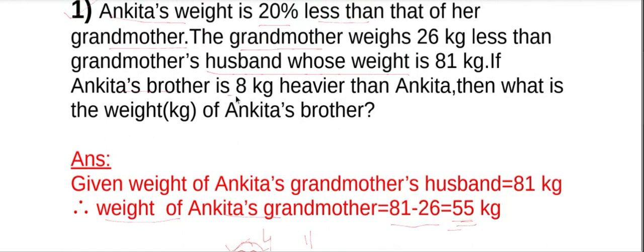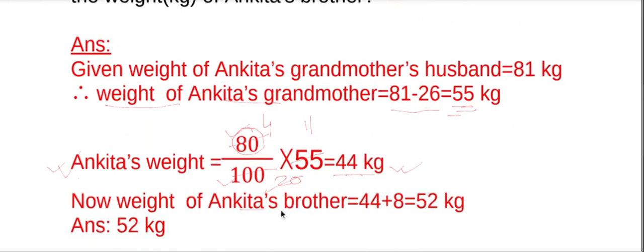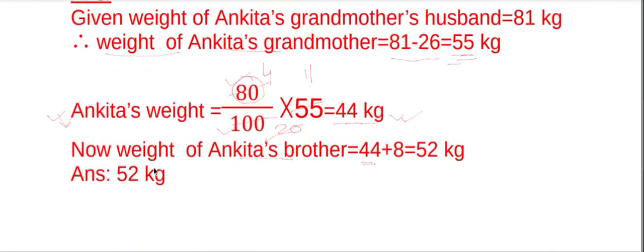Ankita's brother is 8 kg heavier than Ankita, so the weight of Ankita's brother will be 44 plus 8, which is equal to 52 kg. So the weight of Ankita's brother is 52 kg. Thank you.